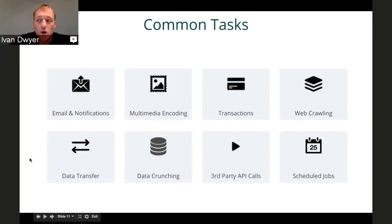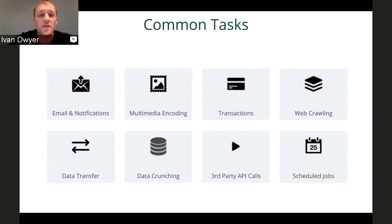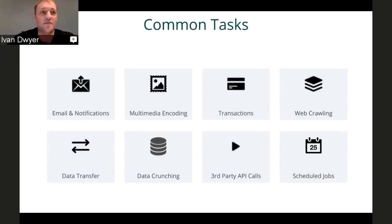Getting more specific — we see a wide range of use cases at Iron.io. Sending emails and notifications, individually and in bulk, really makes sense done asynchronously. You might be connecting to SendGrid or Twilio as a service, and you might have to send a million emails at once. We see a lot of multimedia encoding — very memory- or CPU-intensive tasks that can take a very long time if you're dealing with satellite imagery or medical imaging.